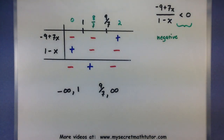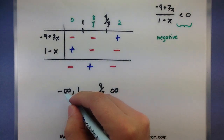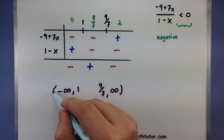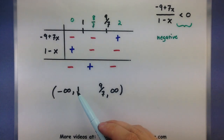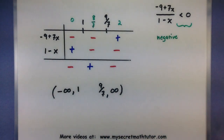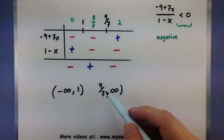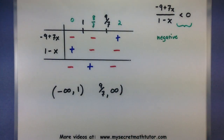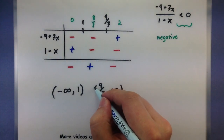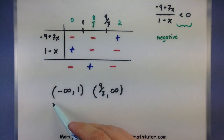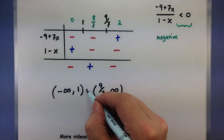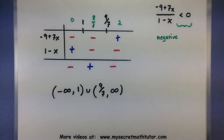Now we need to check all endpoints. Infinity and negative infinity are never included — use a parenthesis. Should we include 1? No, because it makes the bottom 0, and we never include values that make the bottom 0. Should we include 9/7? Plugging it in would make the top 0, giving 0 less than 0, but with a strict inequality we don't include where it equals 0. So the solution is from negative infinity to 1, or from 9/7 to infinity.